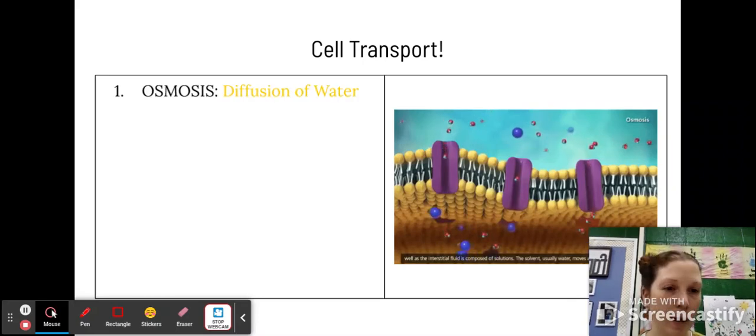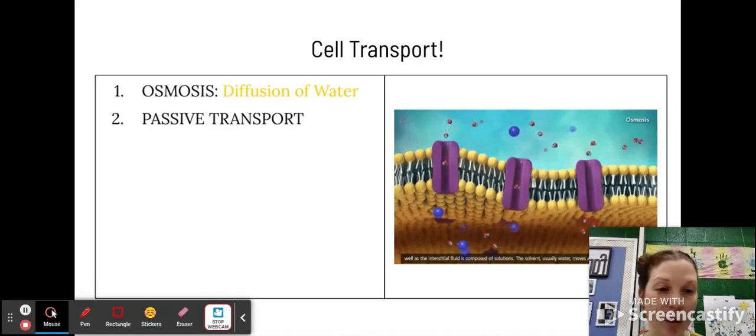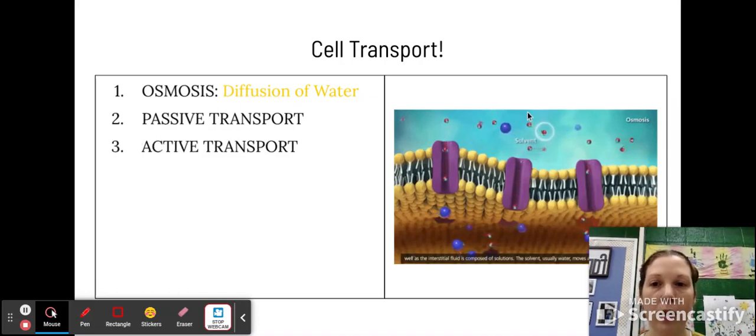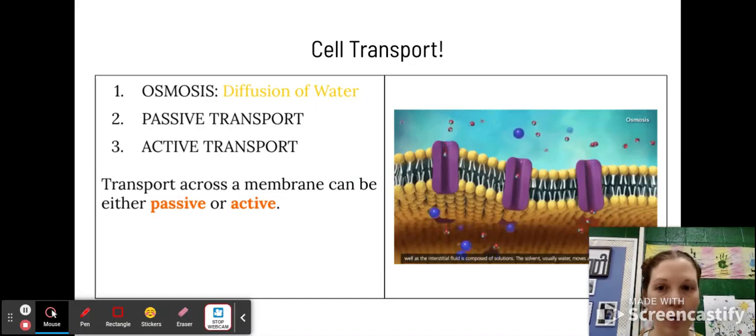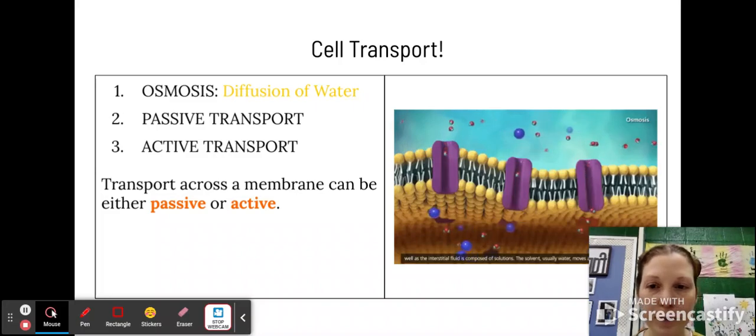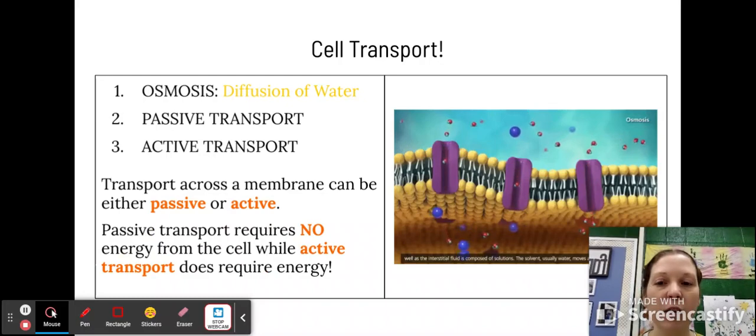So first, one way that we're going to have a whole lesson on itself is osmosis, and this is the diffusion of water, moving water from one place to another. We have passive transport and we have active transport. So transport itself, in general, across a membrane can be either active or passive. And passive transport requires no energy from the cell, while active transport does need energy, and we'll talk about why.